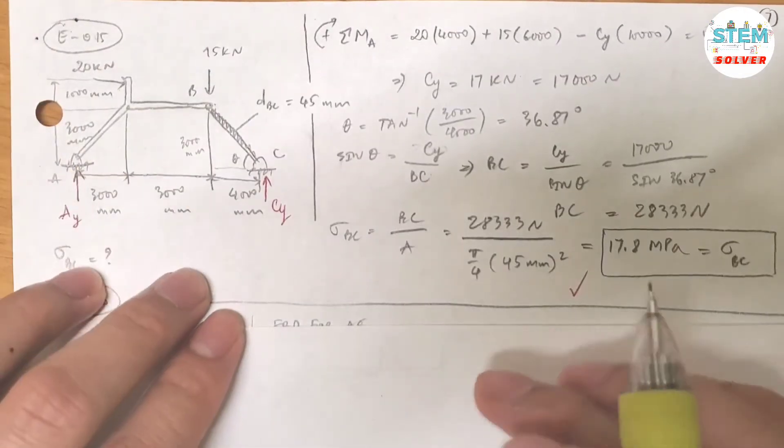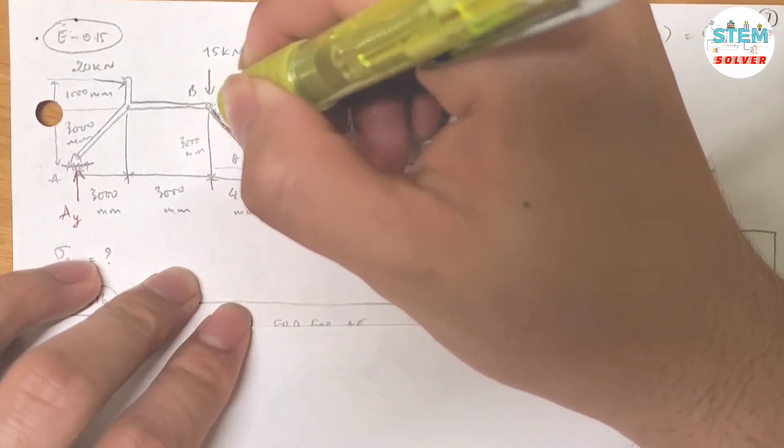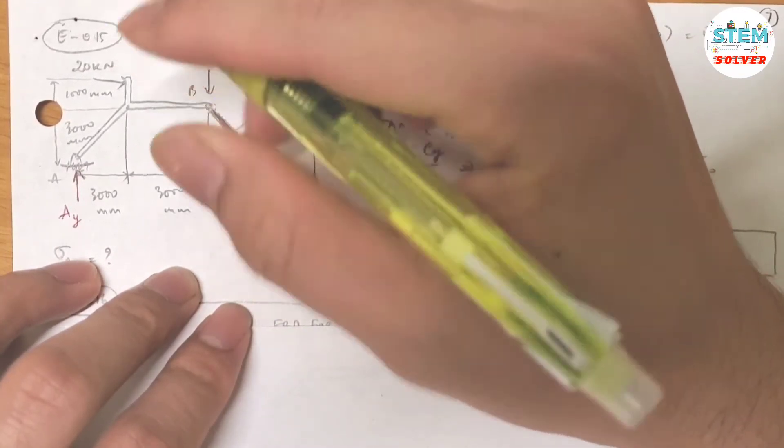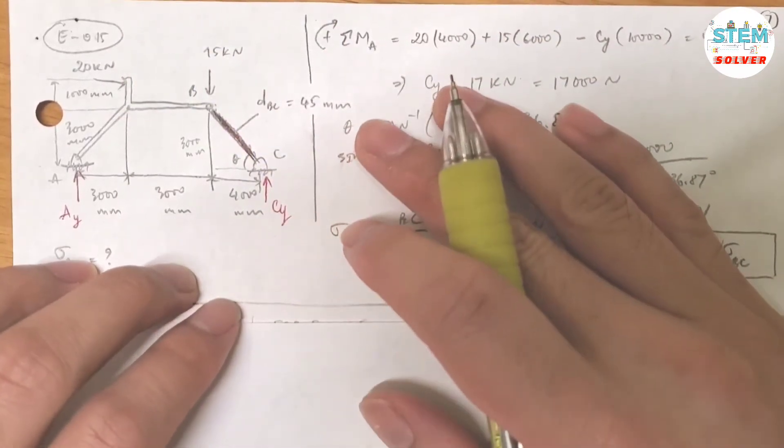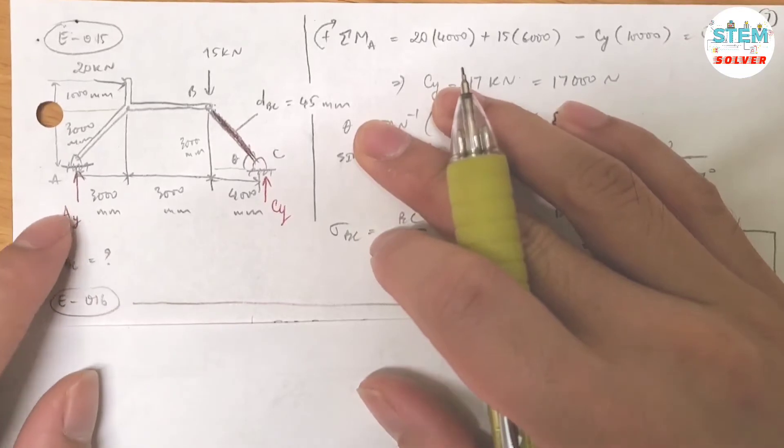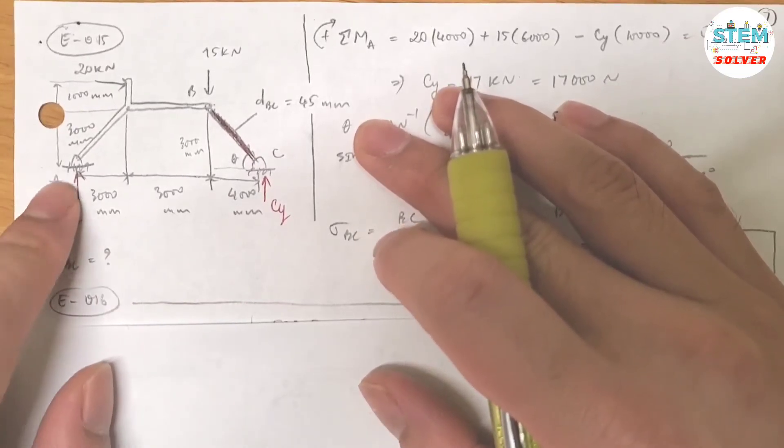So this is the free body diagram for it and we need to find the normal stress in this link, this member BC.